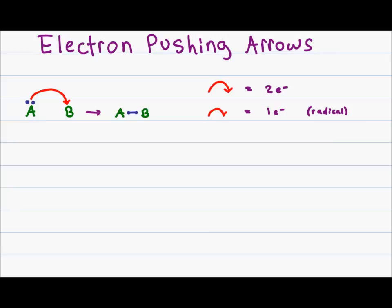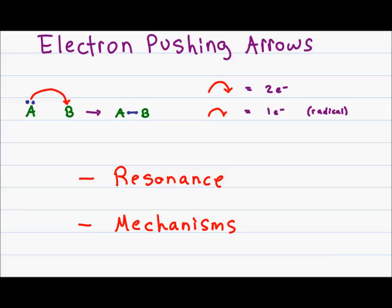These electron pushing arrows will show up in two major aspects of your organic chemistry course. Electron pushing in resonance helps show you how you go from one resonance structure to the other by showing the movement of electrons. The second area where this shows up is in mechanisms. A reaction mechanism shows you how and why a reaction happens by showing what electrons attack what atom and what happens as a result. As you probably noticed, organic chemistry is nothing but mechanisms, mechanisms, and even more mechanisms.